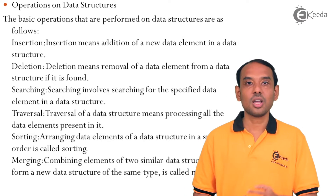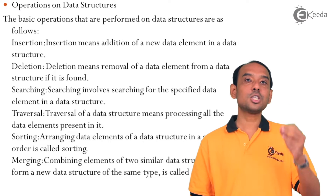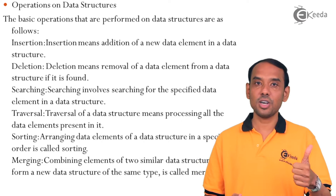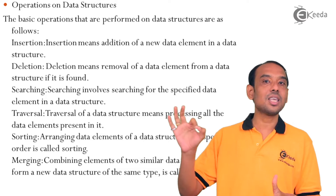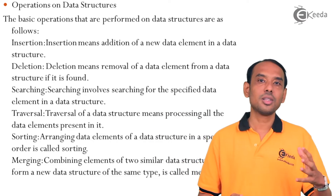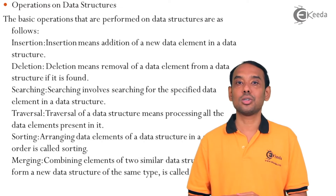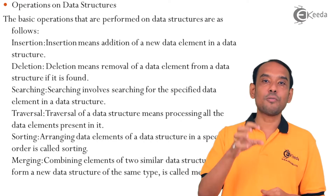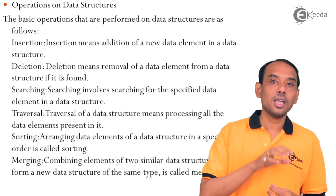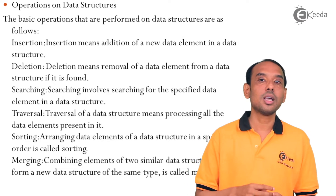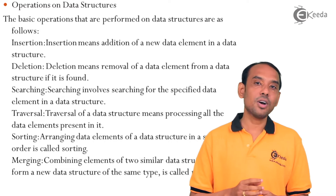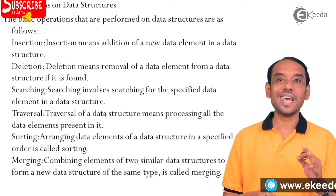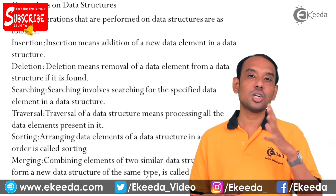Next is searching. Searching is finding a specific data item or data element in a given data structure. There are two conditions: first, the data element needs to be present in the data structure; or it may not be present. So searching is basically to find out whether a given data item is present in the data structure or not, and at what position or index number it is present.